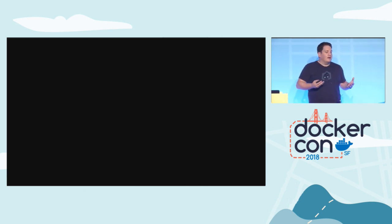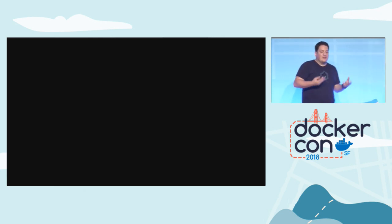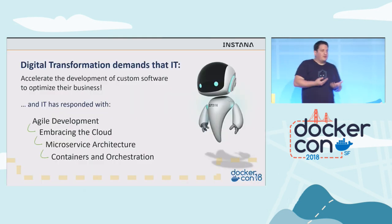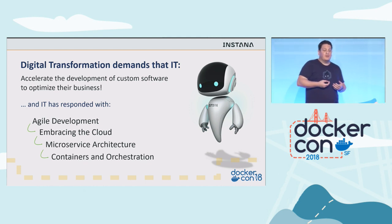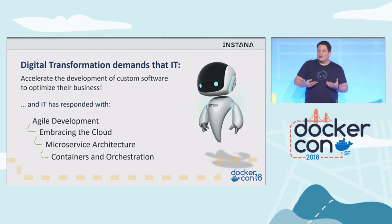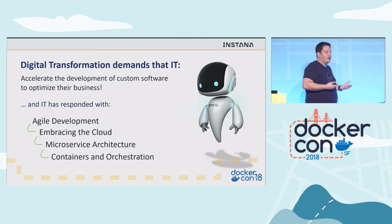Companies across the globe, and quite likely even your own, are experiencing this firsthand. There are several Docker Enterprise customers who are here speaking about those experiences, including my previous employer, Franklin American. Digital transformation is based upon the premise that in order to stay relevant in today's market, businesses must transition to a practice where they become experts at building and delivering software. As a result, IT has responded with agile development — things like Scrum, Kanban, XP — where the requirements and solutions for software evolve through active collaboration with your business.